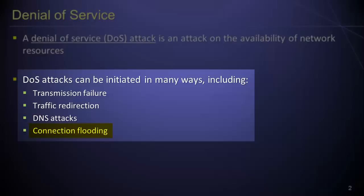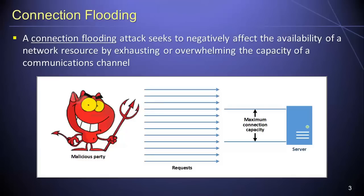Every communications channel has an upper limit on the amount of information it can carry. Similarly, every node on a network has an upper limit on how much data it can process. Flooding a network with so much information that either of these limits is met or nearly met will bring the network to a grinding halt, or at least to a slow crawl, thus disrupting the availability of information assets. A connection flooding attack seeks to negatively affect availability by exhausting or overwhelming the capacity of a communications channel. Connection flooding is the most elementary and often simplest form of DOS attack to implement.